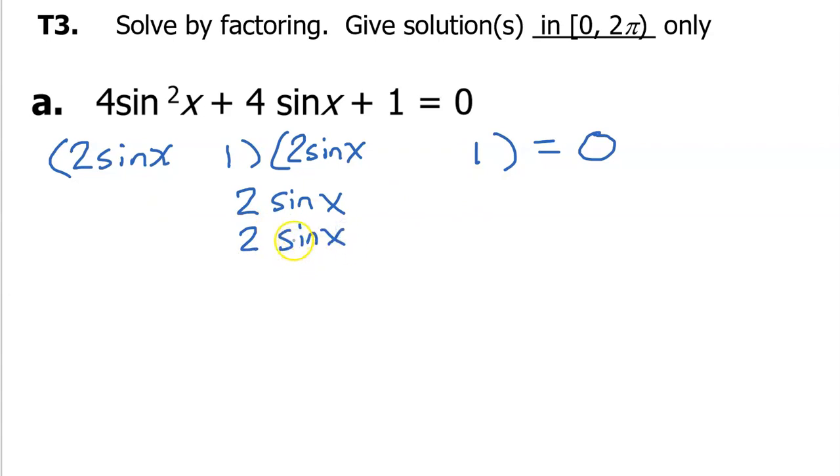Alright, so my little mantra here is inner plus outer equals middle. This is the middle that I'm talking about. So this is looking good. I don't even have to change the signs. If I just leave these as positive, which would correspond to a positive here and a positive here, that does make 4 sine x. I check one last thing. I make sure that 1 times 1 actually gives me this third term of 1. And it does. So that's it. We factored it.